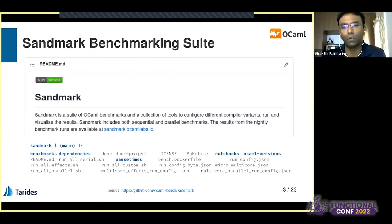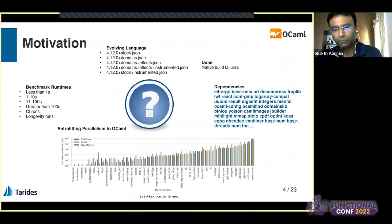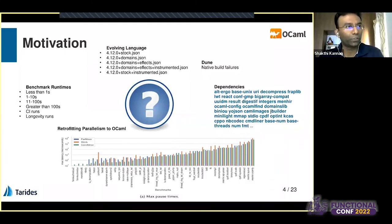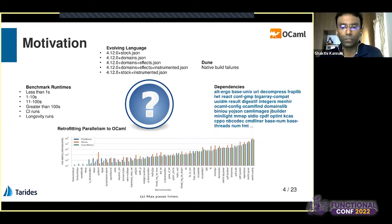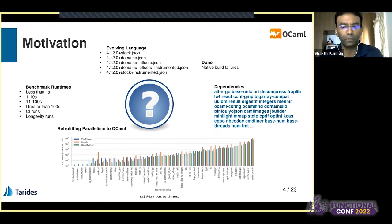Until January 2022, the main stock or trunk OCaml had mostly sequential execution, and the parallel multi-core version was being implemented. In January this year, we merged the parallel and concurrency implementation with stock OCaml. That was a big milestone representing a lot of hard work over the years.